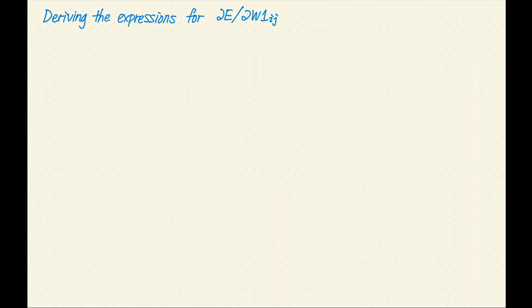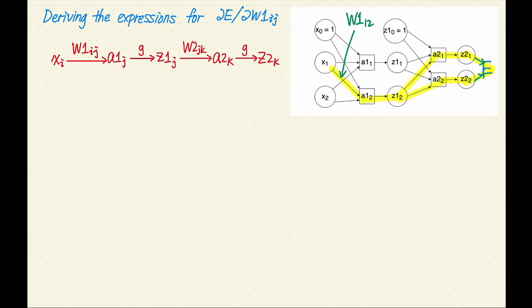Next, let's derive the expressions for the partial derivative of E with respect to W1. These expressions are more complex, but also more interesting. Let's look at a specific example. Consider W1 sub 1,2, the weight between x sub 1 and z1 sub 2. I've highlighted the weight in the picture. How does this weight influence the error or loss?